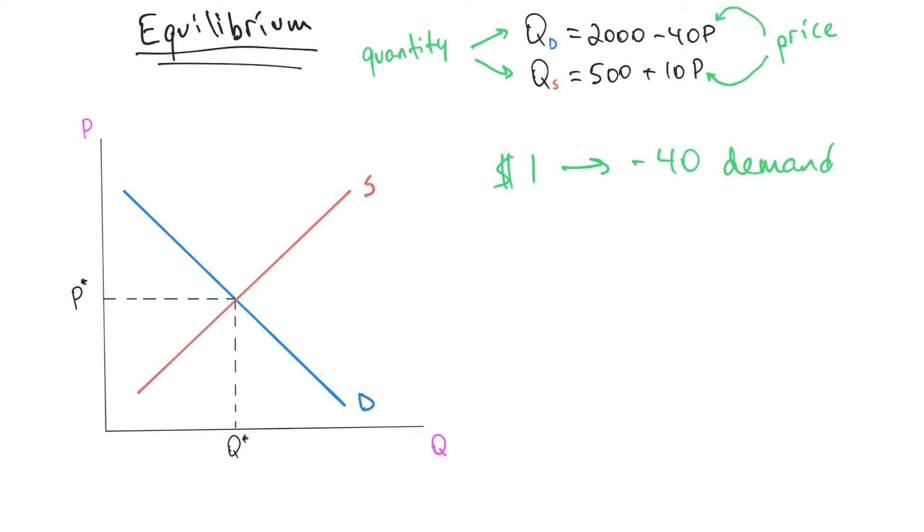And in the q of s, it means that for every one dollar increase in price, companies will want to make 10 more of this thing, this product, whatever it is.